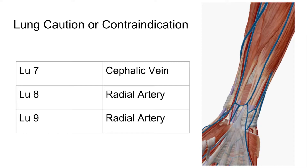Lung 8 and Lung 9 both have the radial artery as a caution. Lung 8 is 1 cun proximal to Lung 9. Lung 9 is a high-yield point — it is the source point, the earth point on the lung channel, and the influential point of vessels. It's located at the wrist joint, right next to the radial artery and the tendon of abductor pollicis longus, level with Heart 7 on the other side. Lung 9 is used more for lung qi deficiency — as the earth point on the metal channel, it is the mother point and tonifies the lung.